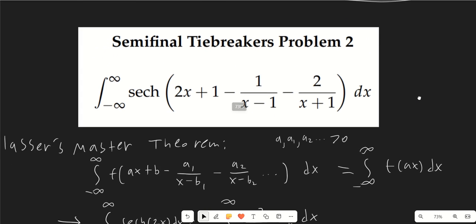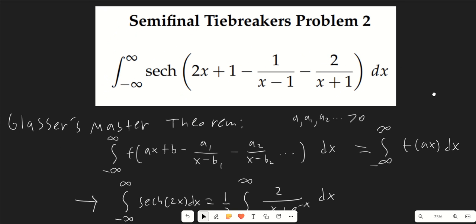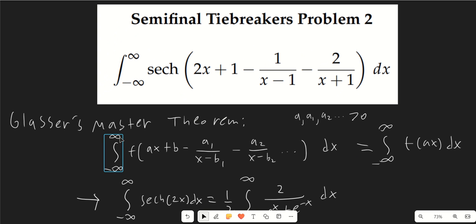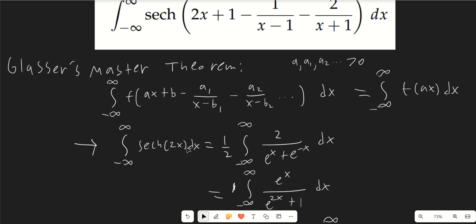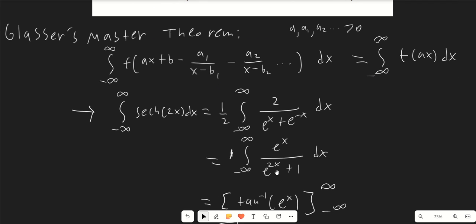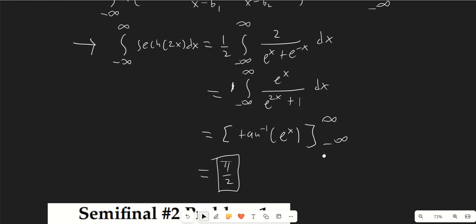For tiebreaker problem 2 we apply Glasser's master theorem, which states that the integral from −∞ to ∞ of f(ax − a₁/(x−b₁) − a₂/(x−b₂) − …) dx equals the integral of f(ax) dx, provided all a-values are positive. This reduces our integral to ∫ sech(2x) dx from −∞ to ∞. Substituting u = 2x, then multiplying by e^x and substituting u = e^x, we get arctan(e^x), giving a final answer of π/2.